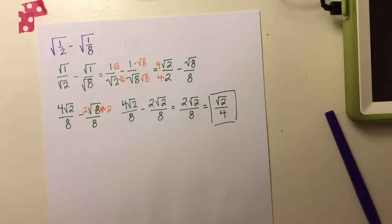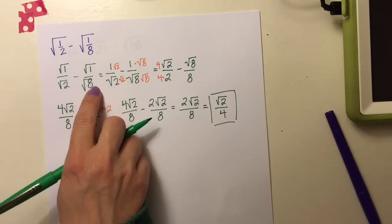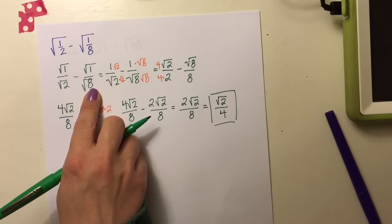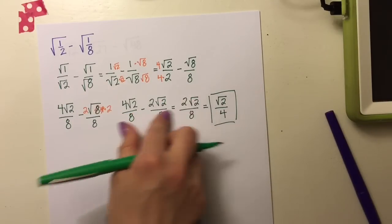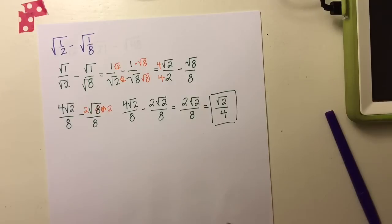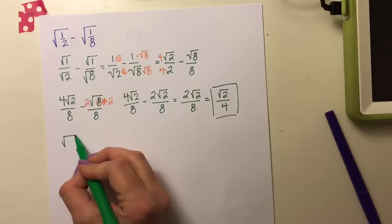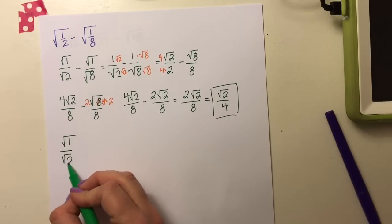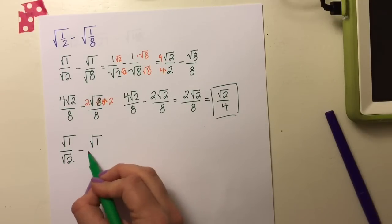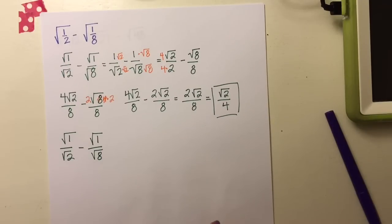Subtracting: 4 − 2 = 2, giving 2√2/8. Since 2 and 8 are both outside the radical, I can simplify to √2/4, and we're done. There are a couple of different ways you could solve this — some of you may have simplified first, and that's fine. You end up with the same answer regardless.